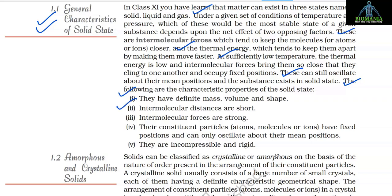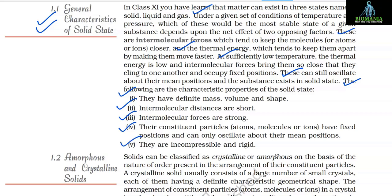Further characteristics of solids: intermolecular distances are short; intermolecular forces are strong; constituent particles — atoms, molecules, or ions — have fixed positions and can only oscillate about their mean positions; and solids are incompressible and rigid.